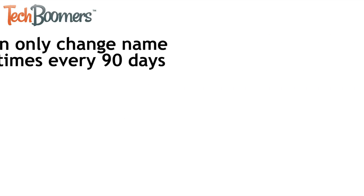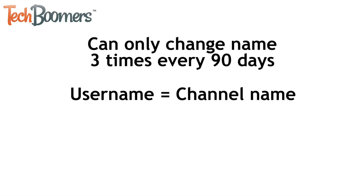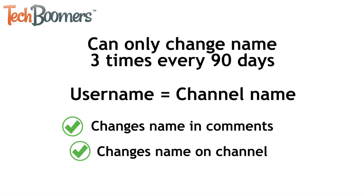Keep in mind that you can only change your YouTube name three times every 90 days. Also remember that your YouTube username and channel name are the same. When you change your username on YouTube, this will change the name that appears when you comment on other people's videos, as well as the name of your channel if you post videos yourself.